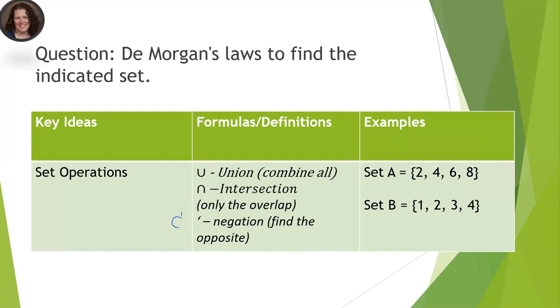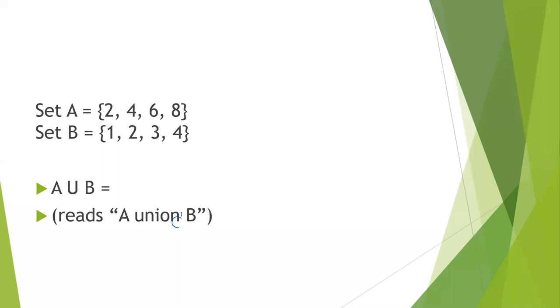So I'm going to give you some examples. And we're going to use set A and set B, as I have written out here. And I'm going to walk you through how to do some set operations here. So let's say we want to do A union B.